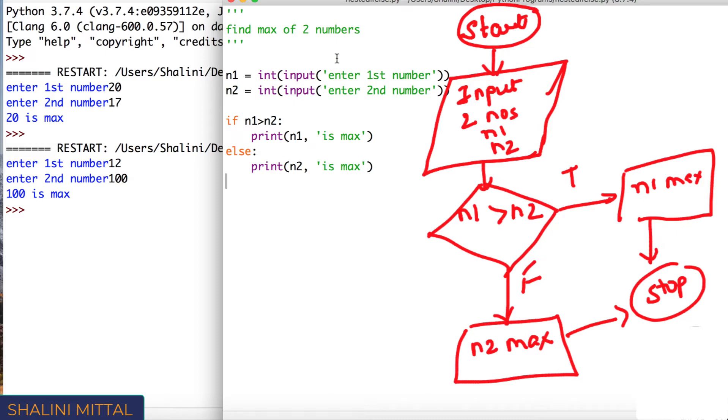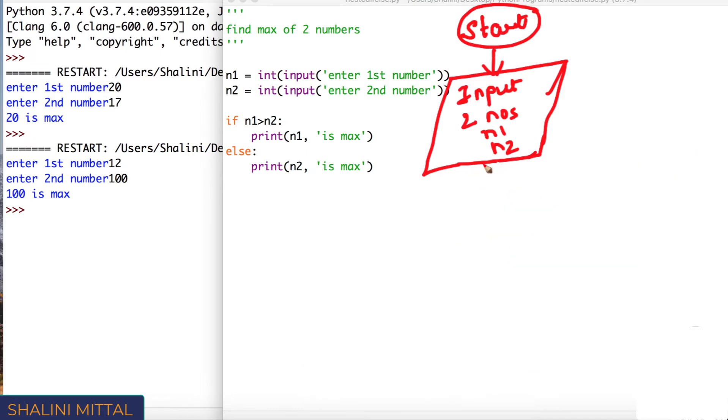Now let's have a twist into it. So say for example, now I want to twist this in a way that if n1 greater than n2, if this condition is true, in that case, I would print n1 is max. If this condition is false, I would again want to check if n2 is greater than n1.